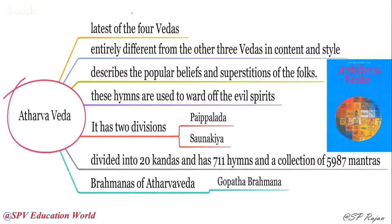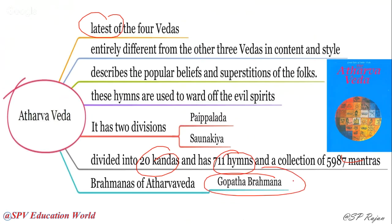Atharvaveda is the latest of the four Vedas. It has three methods of different content and style, mostly dealing with popular beliefs, superstitions, controlling evil spirits, and tantric practices. It has two divisions: Paippalada and Saunakiya. It contains 20 Kandas, 711 hymns, and 5987 mantras. The Brahmana of Atharvaveda is Gopatha Brahmana — remember only one Brahmana in Atharvaveda.